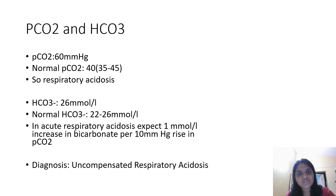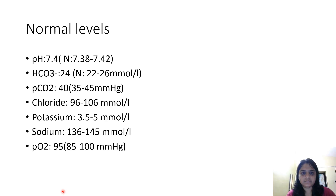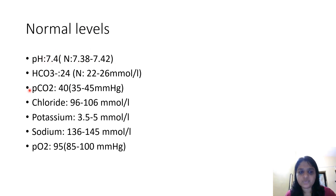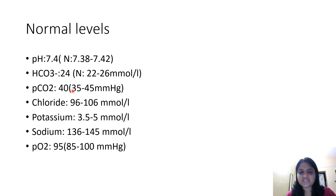The purpose of compensation is to bring the blood pH back to the normal level. Now let's check the normal levels of ABG parameters. pH is 7.4, ranging from 7.38 to 7.42. Bicarbonate is 24, ranging from 22 to 26. Partial pressure of carbon dioxide — PCO2 — is 40, ranging from 35 to 45. PCO2 is the respiratory component and bicarbonate is the metabolic component.